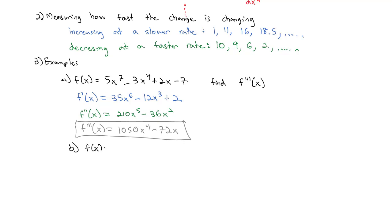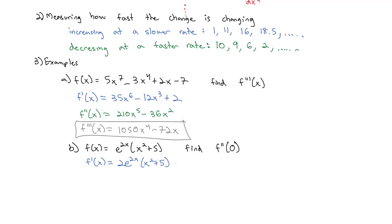Let's do another one. Let's say f(x) = e^(2x) times (x² + 5), and we want to find not just the second derivative but evaluate it at x = 0. To find the first derivative we have a product rule: the derivative of e^(2x) is 2e^(2x) using the chain rule, times the second part, plus the derivative of the second part which is 2x, times the first part e^(2x).